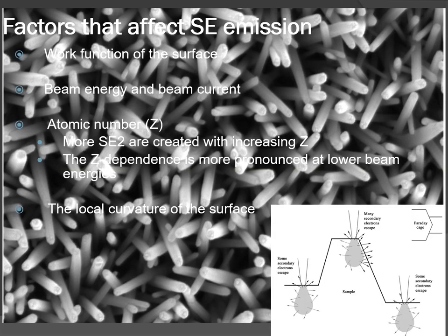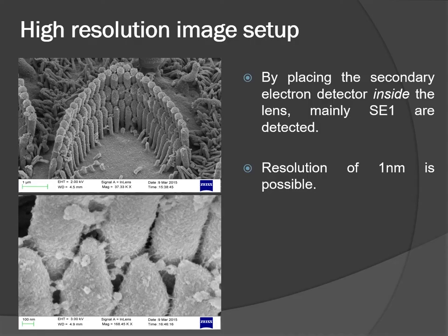Factors that affect secondary emission include the work function of the surface, beam energy and beam current, and the atomic number — more secondary electrons are created with increasing Z, and this Z dependence is more pronounced at lower beam energies. By placing the secondary electron detector inside the lens, mainly SE1 electrons are detected, and a resolution of 1 nm is achievable.